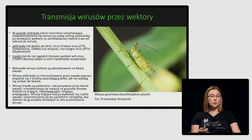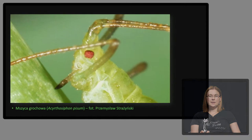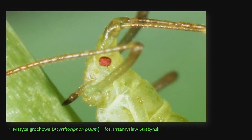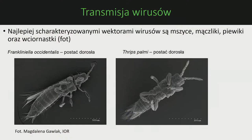Wirusy przenoszone trwale przez owady mogą też replikować w ciele owada. Widać tu zbliżenie głowy mszycy z kujką dotykającą roślinę – do tej kujki wiążą się wirusy. Gdy mszyca przesiądzie się z jednej rośliny na drugą, przynosi wirusa ze sobą. Wciornastki przenoszą wirusy w sposób trwały – na przykład wirusa brązowej plamistości pomidora. Badaliśmy wciornastka zachodniego.